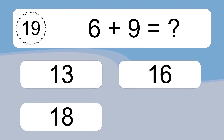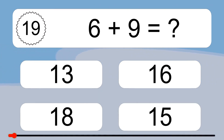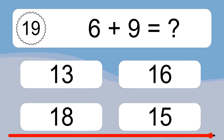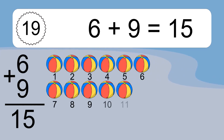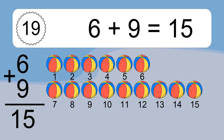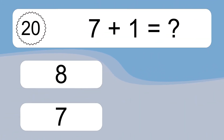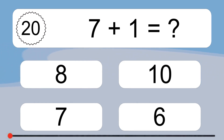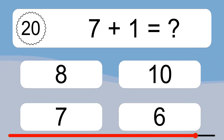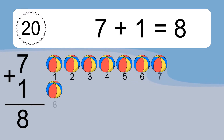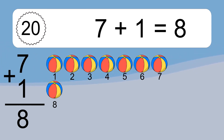6 plus 9 equals what? Let's count it: 1, 2, 3, 4, 5, 6, 7, 8, 9, 10, 11, 12, 13, 14, 15. Let's count it: 1, 2, 3, 4, 5, 6, 7, 8.